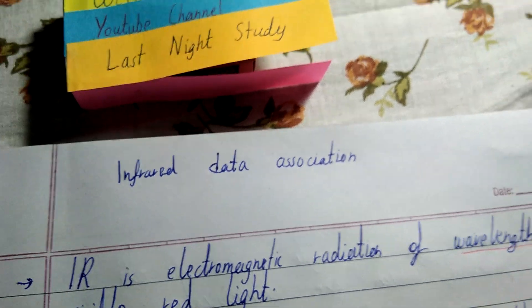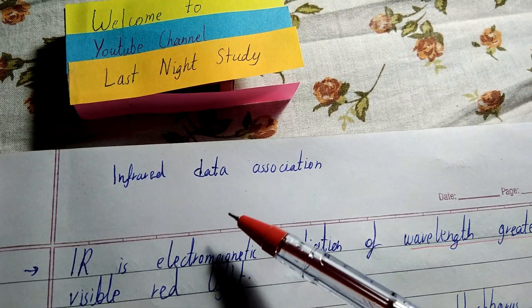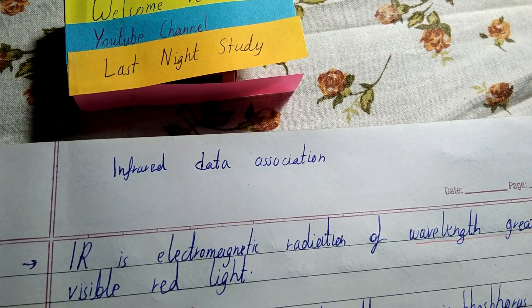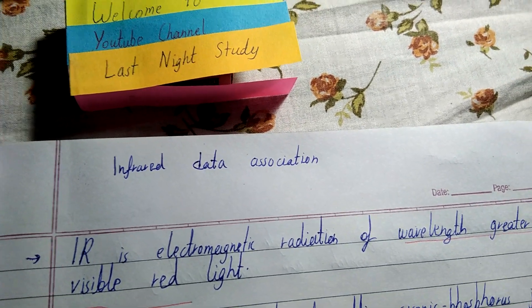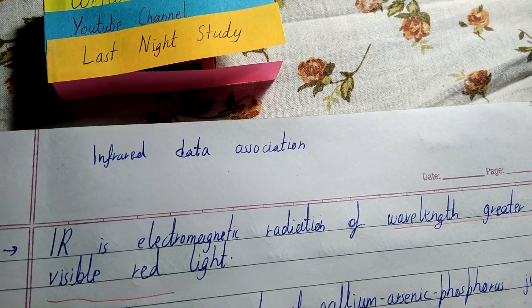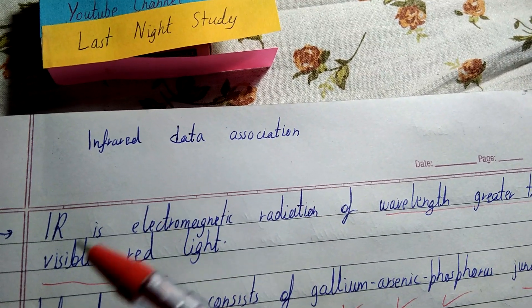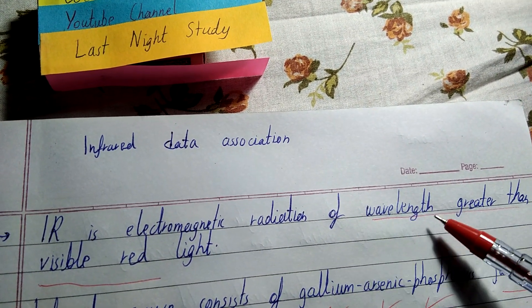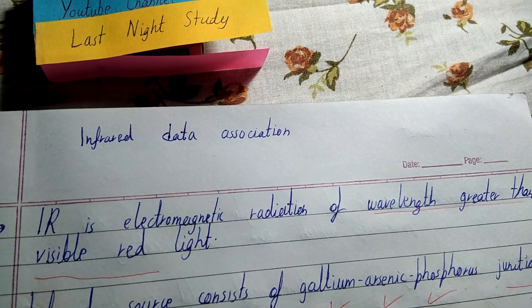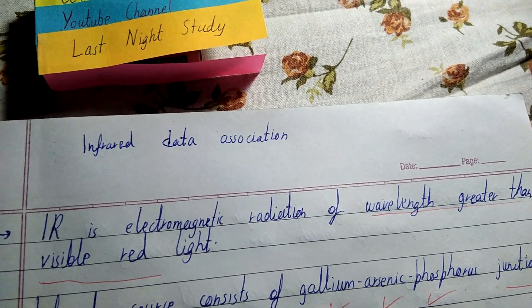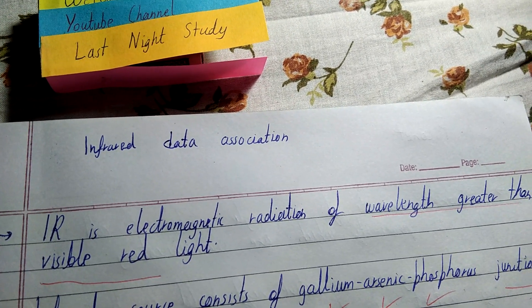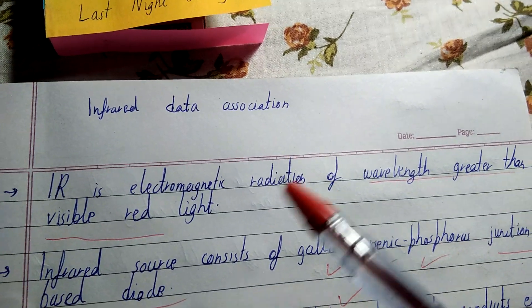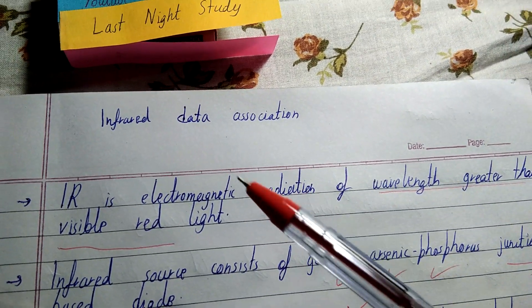Hello friends. In this video I will be helping with infrared data association. Infrared radiation is an electromagnetic radiation of wavelength greater than visible red light. So radiation having wavelength greater than visible red light is infrared radiation. Now let us come to the second point: what are the sources of infrared radiation?